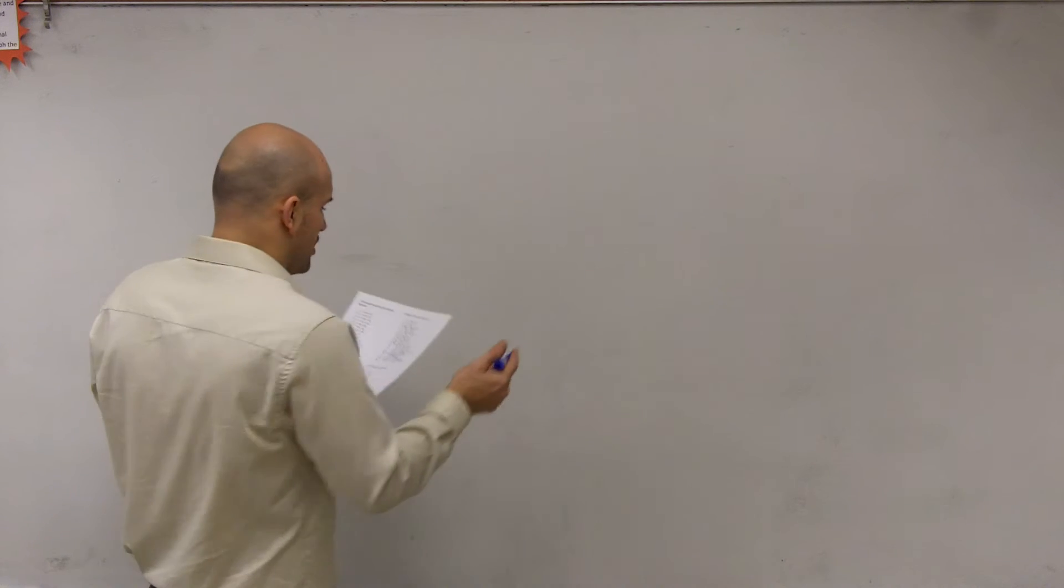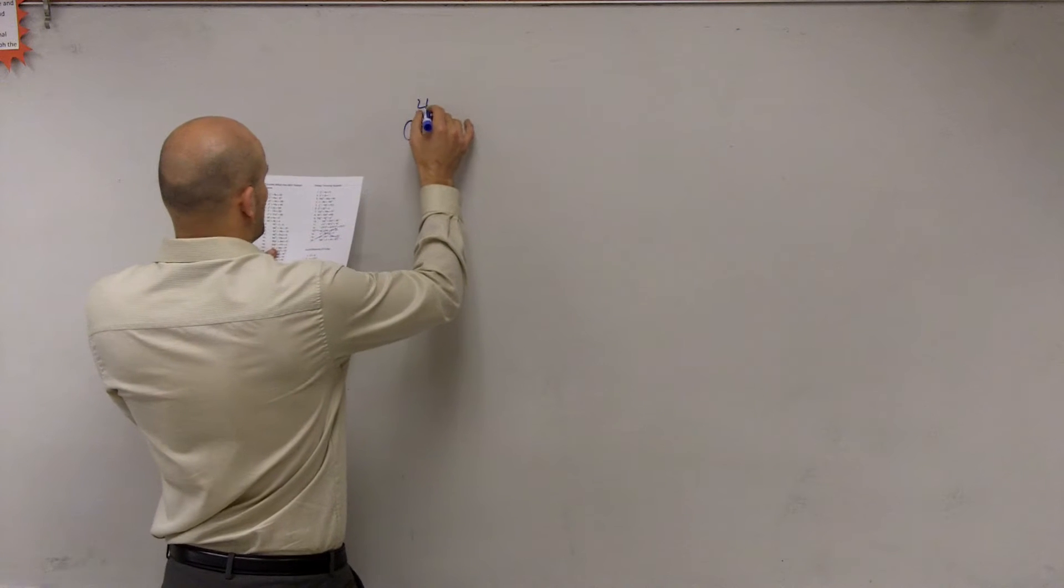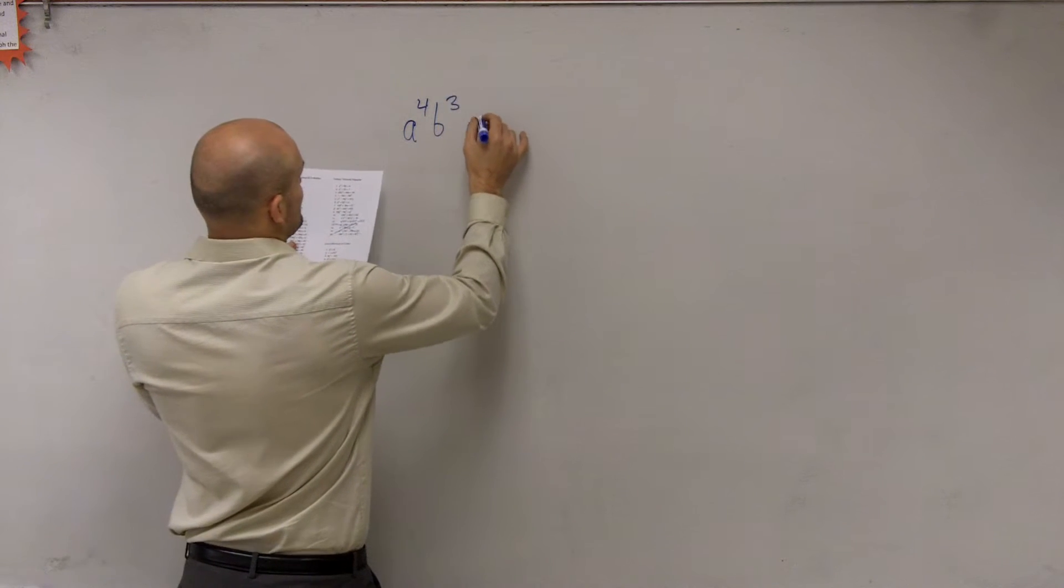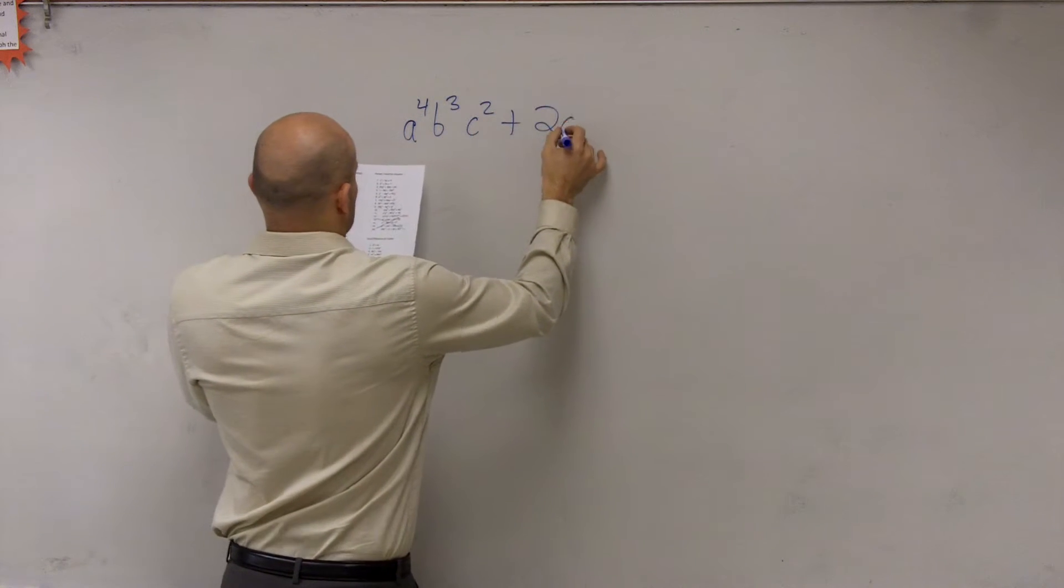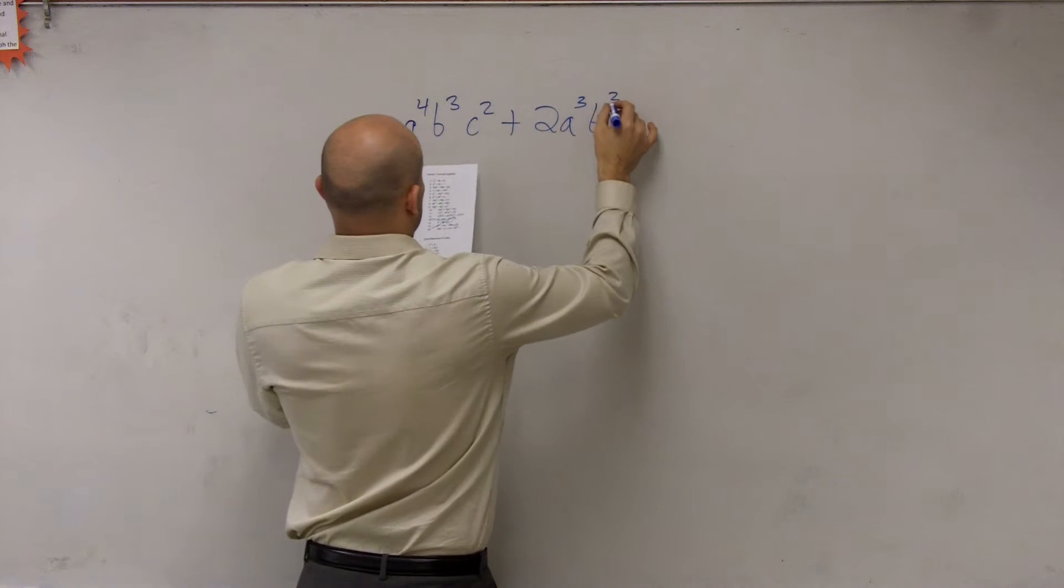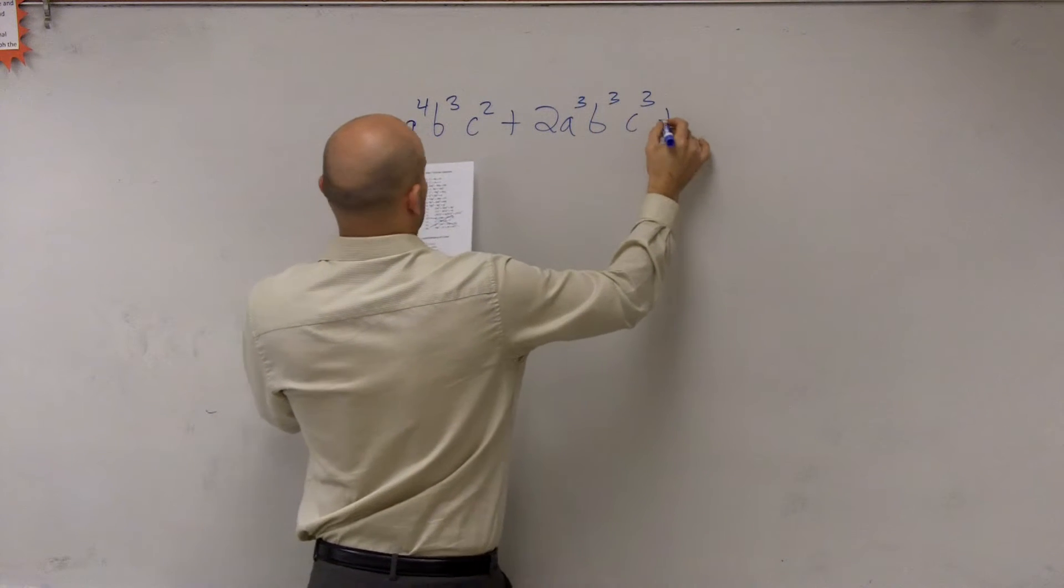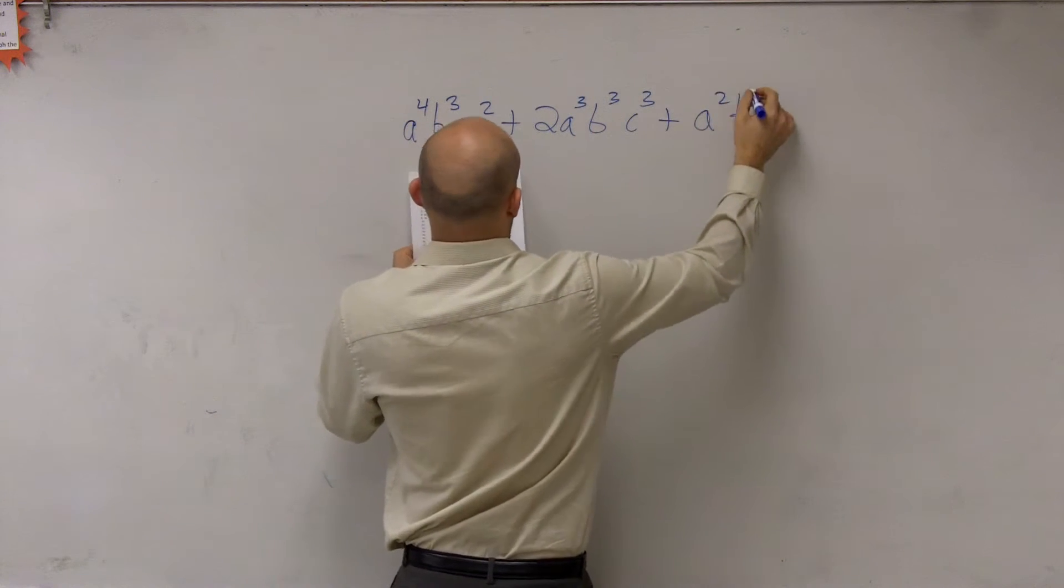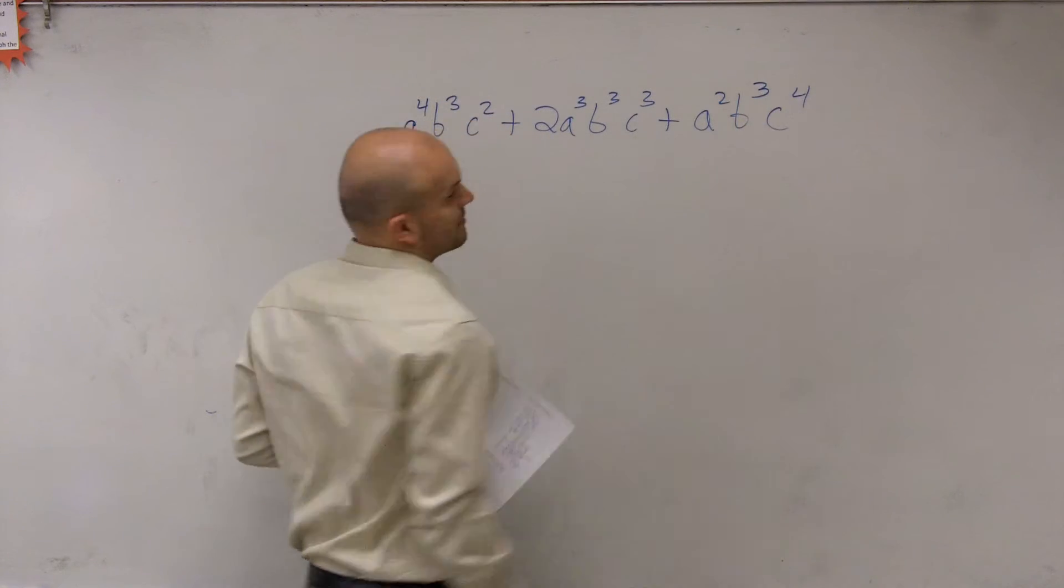A little bit too much going on. So number 12 is a to the fourth b cubed c squared plus 2a cubed b cubed c cubed plus a squared b cubed c to the fourth.